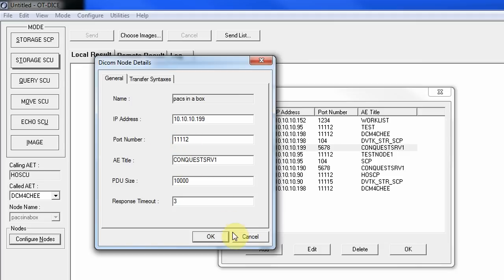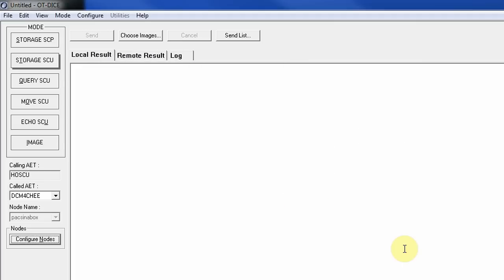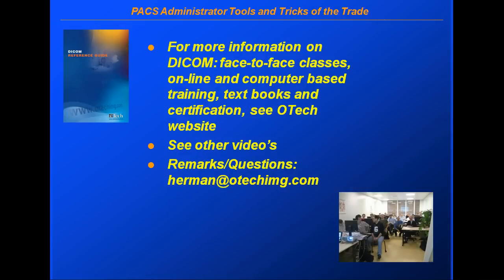Once everything is configured, we're done. As you can see, it's relatively easy to set up a DICOM modality. To recap: make sure you have unique AE titles, set up your calling and called AE titles and the AE titles of the devices you want to communicate with, make sure IP addresses are correct, AE titles are unique, and use port number 11112.